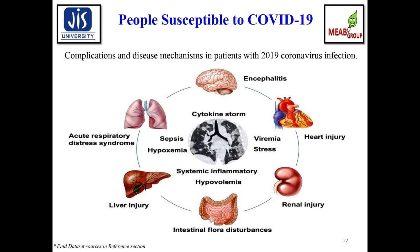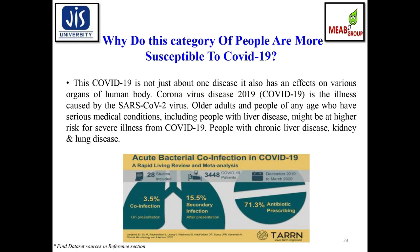A presentation shows how people become susceptible to COVID-19 and the associated complications and disease mechanisms in infected patients. COVID-19 is not just about one disease — it affects various organs of the human body. Older adults and people with serious medical conditions including liver, kidney, or lung disease may be at higher risk of severe illness from COVID-19 infection.